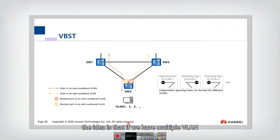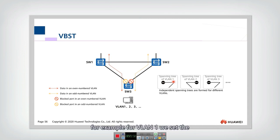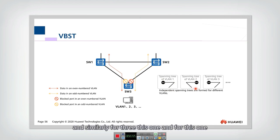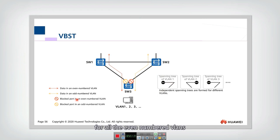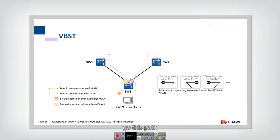The idea is that if we have multiple VLANs, we can set a different spanning tree for each VLAN. For example, for VLAN 1 we set one spanning tree, for VLAN 2 another, and similarly for 3 and 4. For every VLAN, we have a separate spanning tree. In that case, even-numbered VLANs will go from one path, and odd-numbered VLANs will go from another path.